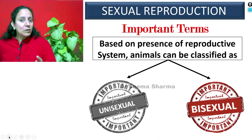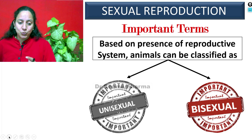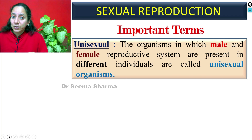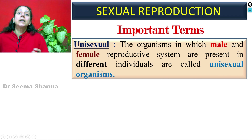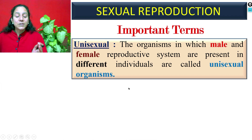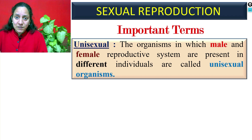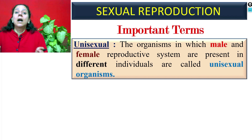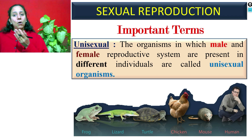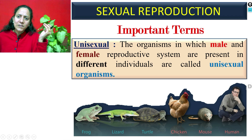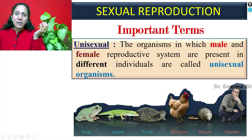Unisexual — 'uni' means one. Organisms in which the male and female reproductive systems are present in different individuals are called unisexual organisms. There is a clear-cut difference between male and female individuals: one has a male reproductive system and the other has a female reproductive system. Examples include human beings — we are unisexual, we are either female or male. There is a long list of unisexual animals, a few examples of which are visible in this slide.